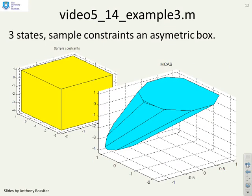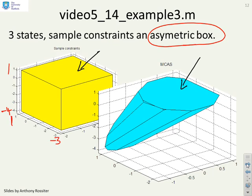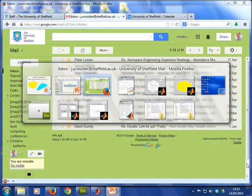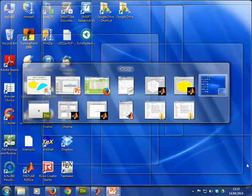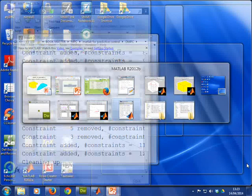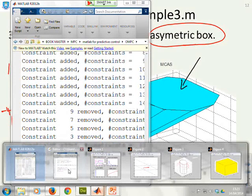Video 5.14 example 3 has three states. Here you've got the sample constraints, and over here you've got the MCAS. The MCAS is a lot smaller than the sample constraints in this case. We've deliberately chosen asymmetric constraints originally. Can you see here, I've got a minus 4 and a 1, and this one goes from 1 to minus 3. We've chosen asymmetric constraints to demonstrate there's no problem, and your MCAS has a rather unusual shape. If you want to look at these pieces of code and run them yourself.